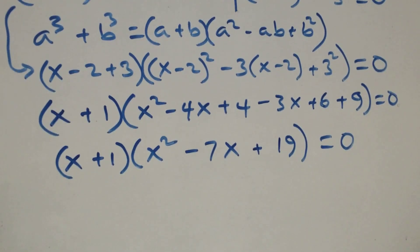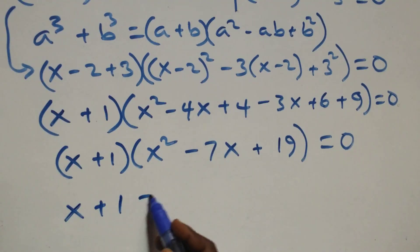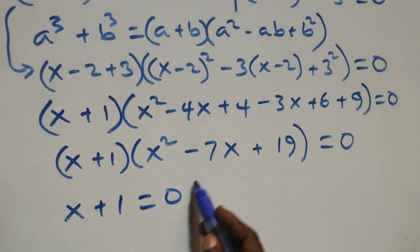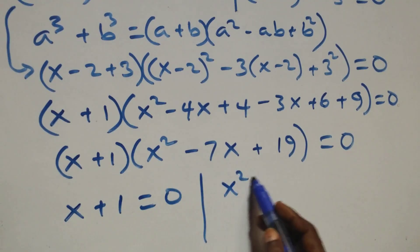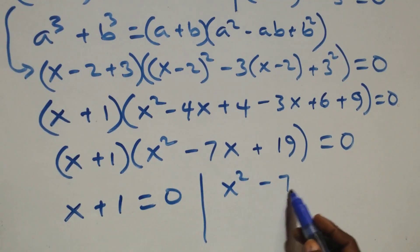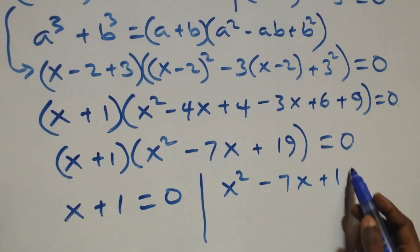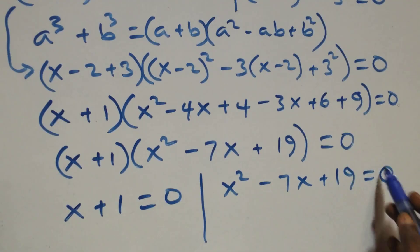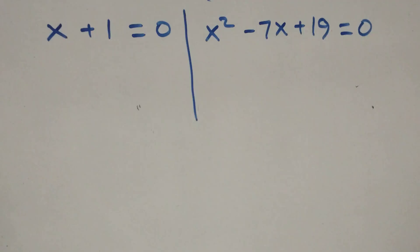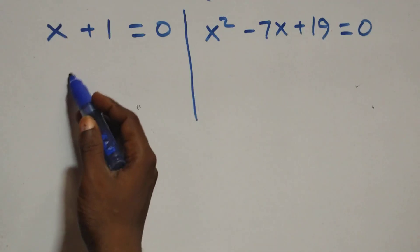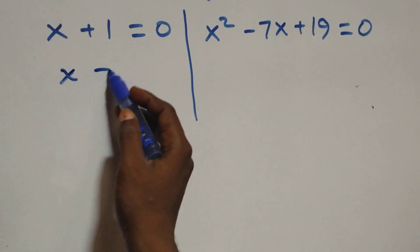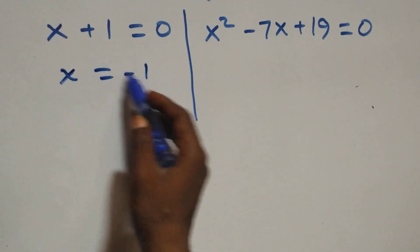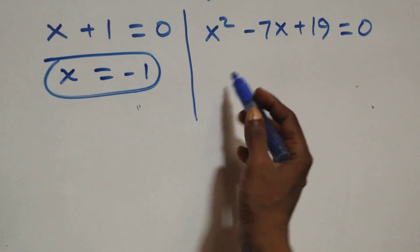Here we have two possible cases: first, x plus 1 equals 0, giving x equals negative 1, which is a real solution; or we have x squared minus 7x plus 19 equals 0, which is a quadratic equation.